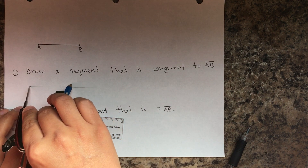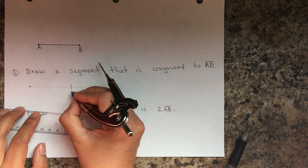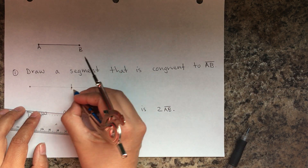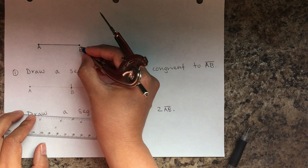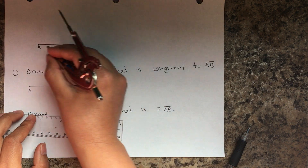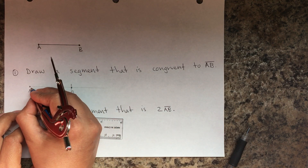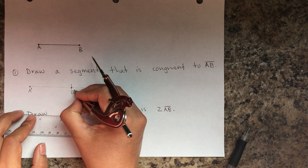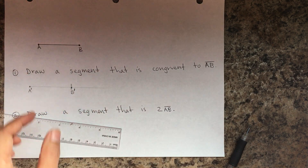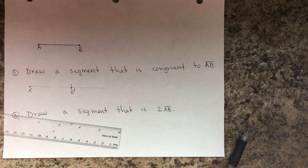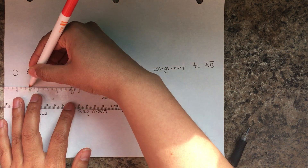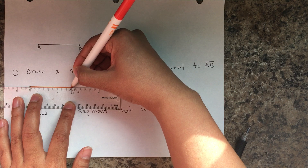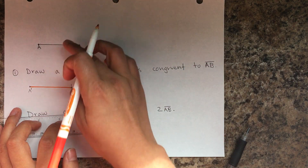Mark the endpoint, and that intersection will be point B. To show that this is the original and that is the copy, we call them A-prime and B-prime. My line congruent to AB goes from here to here — they are exactly the same measurement, they are congruent.